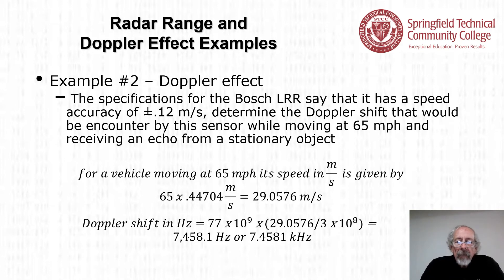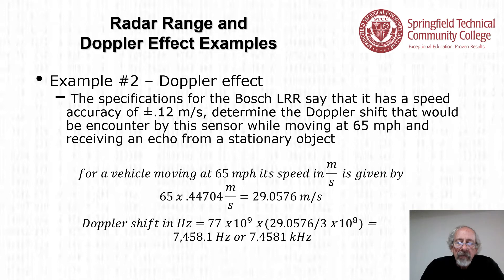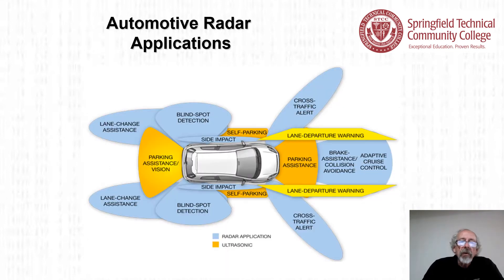For the Doppler effect example: the Bosch long range radar has a speed accuracy of plus or minus 0.1 meters per second. The Doppler shift encountered while moving at 65 miles per hour and receiving an echo from a stationary object works out to be approximately 7,458.1 hertz, or roughly 7.4581 kilohertz.